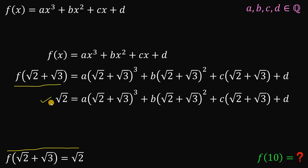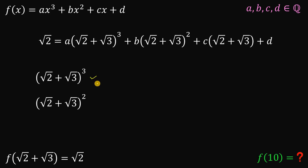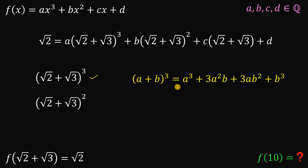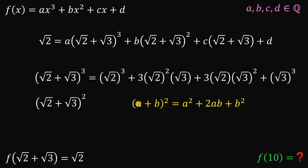Now we will focus on this result. What we're going to do is expand square root of 2 plus square root of 3 raised to the power of 3, and square root of 2 plus square root of 3 raised to the power of 2. We can expand the first one using the identity a plus b raised to the power of 3, which equals a cubed plus 3a squared b plus 3ab squared plus b cubed. We expand the second one using the identity a plus b squared, which equals a squared plus 2ab plus b squared.